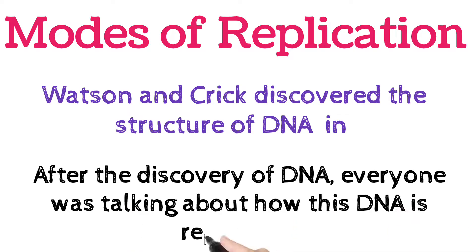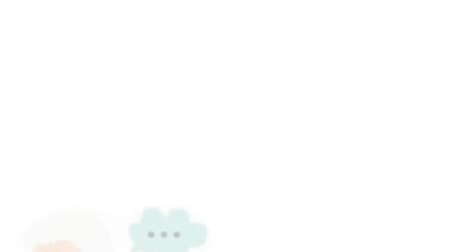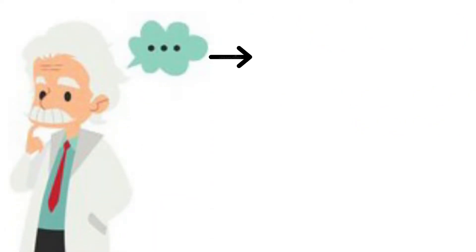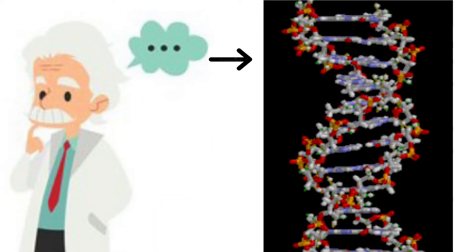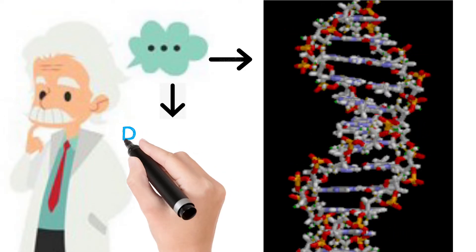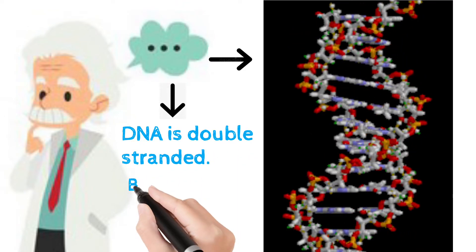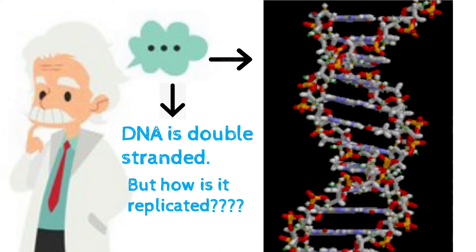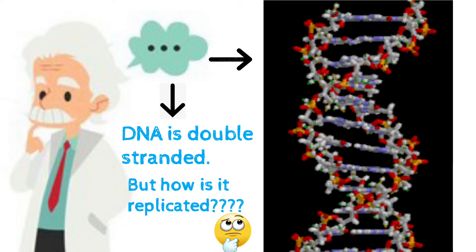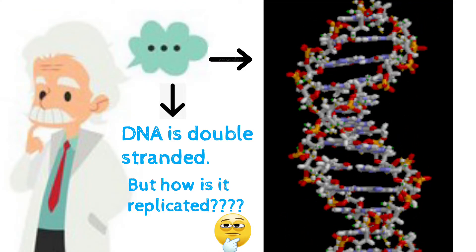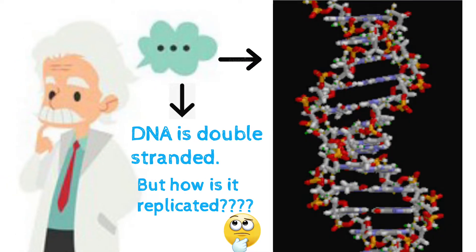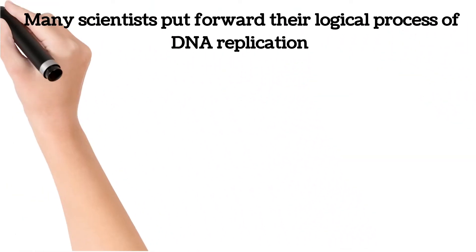To understand models of replication, you should know some key terms. DNA, or deoxyribonucleic acid, is a double-stranded, self-replicating genetic material present within a cell, responsible for the functioning and development of an organism. Replication is the process of duplicating the DNA molecule to form an exact same copy — from the parent molecule, a daughter DNA molecule is formed.